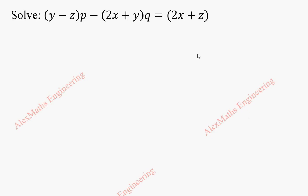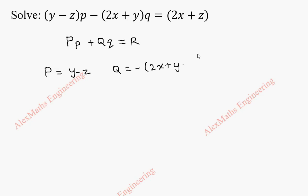Hi students, this is Alex here. In this video we are going to find the solution for the given partial differential equation. This is of the form P·p + Q·q = R. From this we find capital P is y minus z, capital Q is minus 2x plus y, and capital R is 2x plus z.